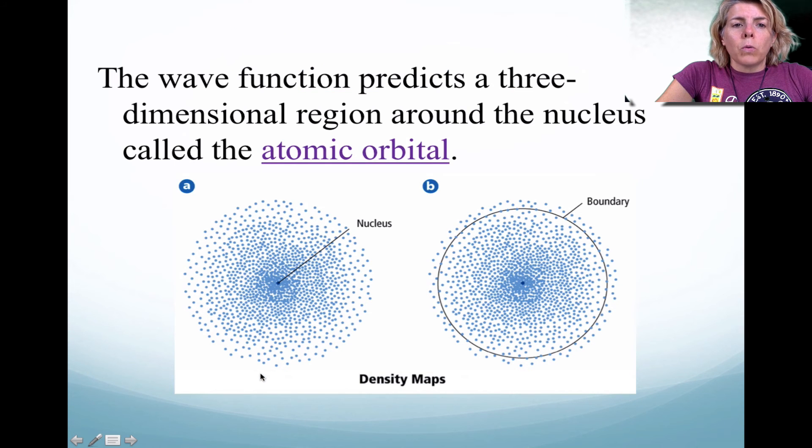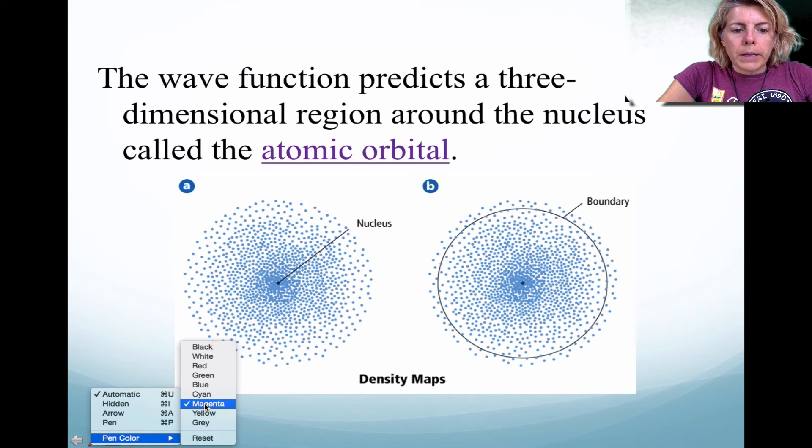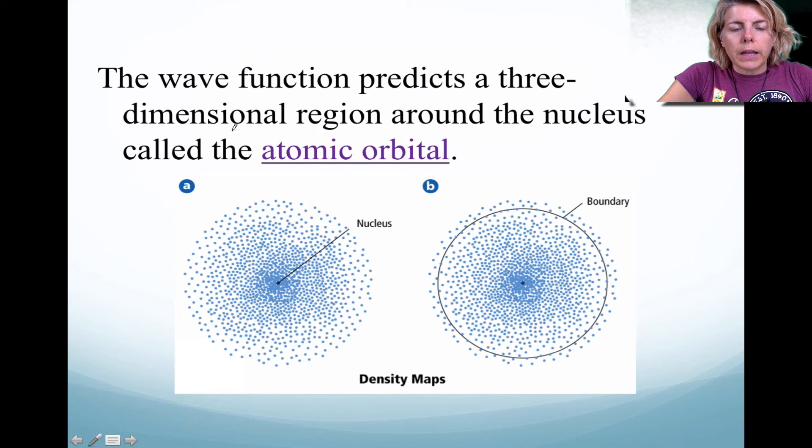And he took de Broglie's idea, and he did demonstrate that you could view the electron as a three-dimensional wave. So what he did is he actually used math, and by using the math, he created a three-dimensional region. And this three-dimensional region, he called it an atomic orbital. So these little dots represent the probability of finding an electron around that area. And notice that the closer you are to the nucleus, the more likely you're going to find that electron.